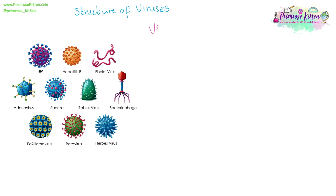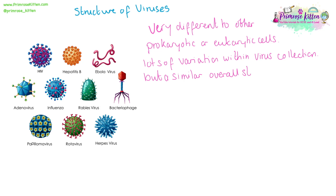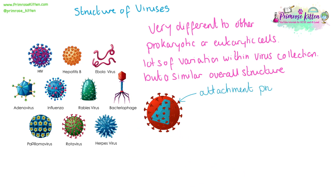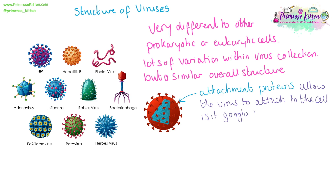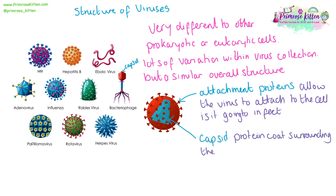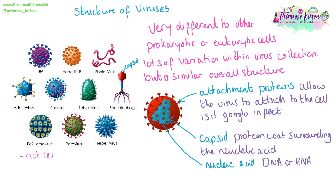Viruses are acellular but they are very different to bacteria, and they all have very different structures to each other. A bacteriophage looks very different to an Ebola virus, which looks very different to an adenovirus. But within this variation, all viruses have a similar overall structure. On the outside they will have attachment proteins, which allow the virus to attach to the cell it's going to inject itself into. They will have a capsid — a protein coat surrounding the nucleic acid — and the nucleic acid can be DNA or RNA.